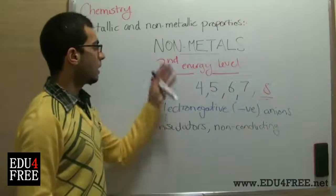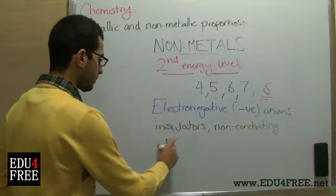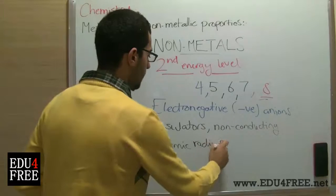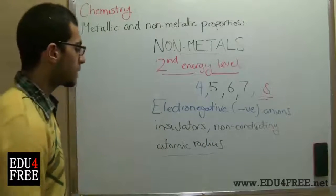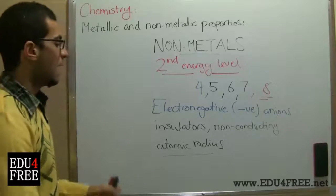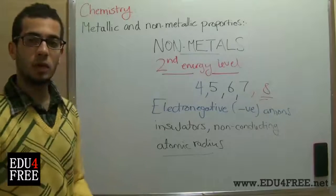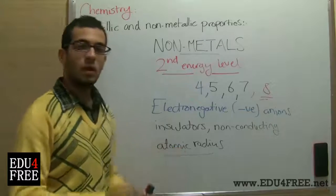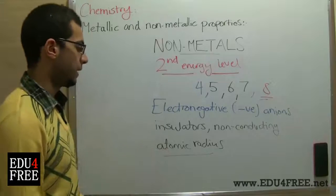Finally, the nonmetals' atomic radius is small, which is the opposite of metals. This means that the outermost electrons are near to the nucleus, and the attraction force between the nucleus and the outermost electrons is high. This leads to a high ionization potential and a high electron affinity.